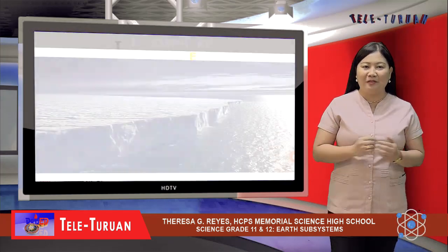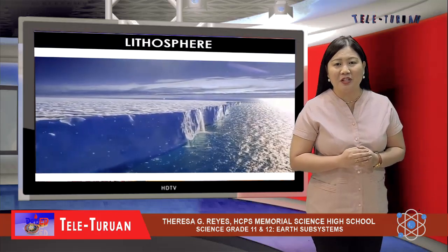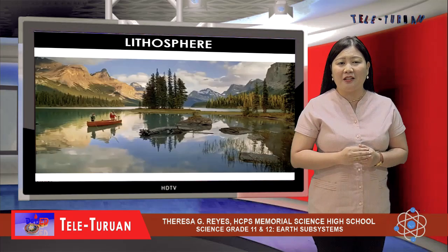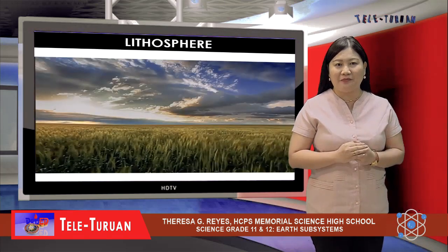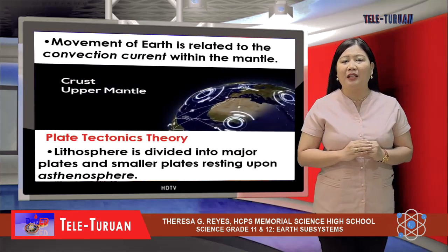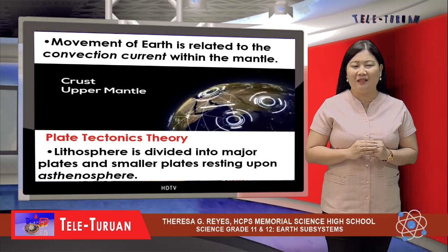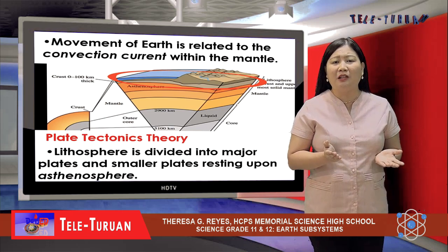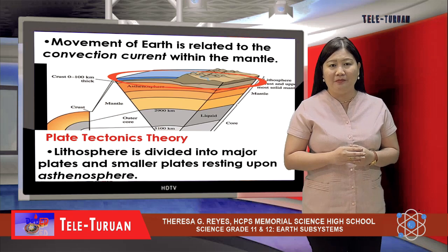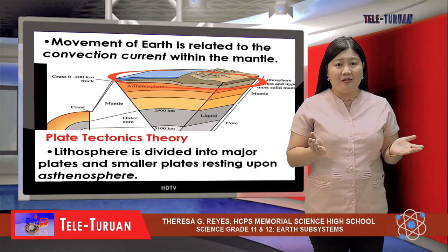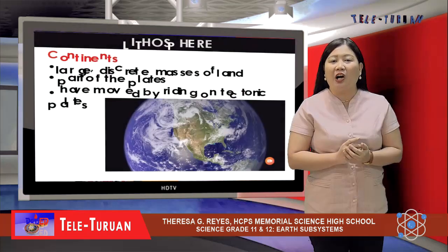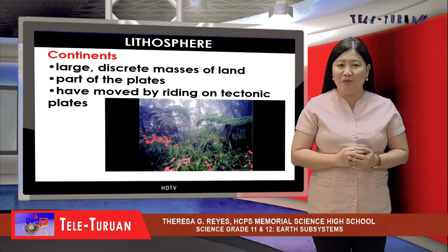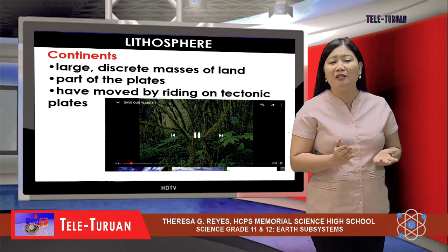Let's begin with the Lithosphere. The Lithosphere includes the entire Earth's crust and the rigid upper mantle. The two crusts are the continental and oceanic crusts. The Lithosphere is divided into a number of huge plates that move in relation to one another. The large-scale movement of Earth's plates is related to the convection currents within the mantle. As explained by the plate tectonics theory, the Lithosphere is divided into major plates and smaller plates resting upon the lower soft layer called the asthenosphere. Continents are not the same as plates — they are large discrete masses of land separated by expanses of water and are part of the plates. Continents have moved by riding on tectonic plates for millions and millions of years.